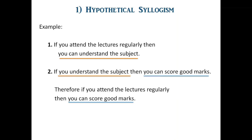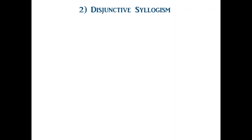Now we come to the second type of syllogism, that is disjunctive syllogism. Disjunctive syllogism is a deductive argument in which the first premise is a disjunctive proposition which states alternatives, and the second premise is the denial of the first alternative of the disjunctive proposition. From this one can derive the conclusion which is the affirmation of the second alternative.